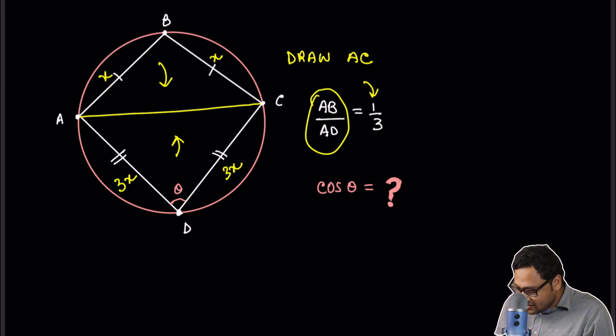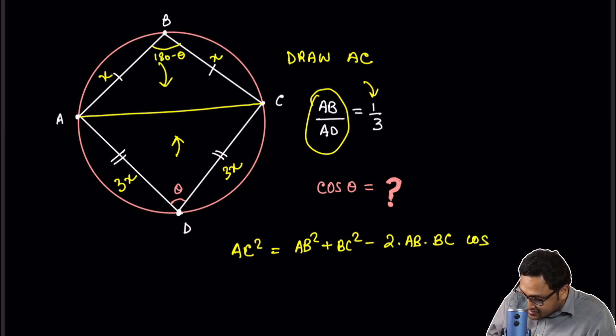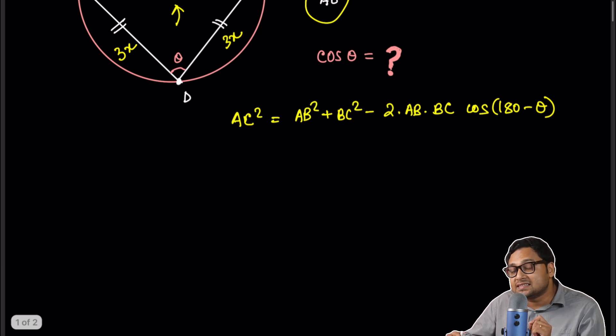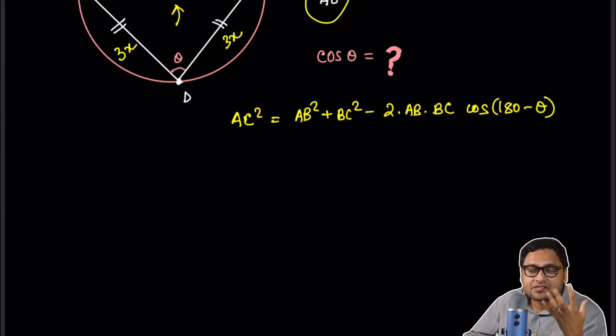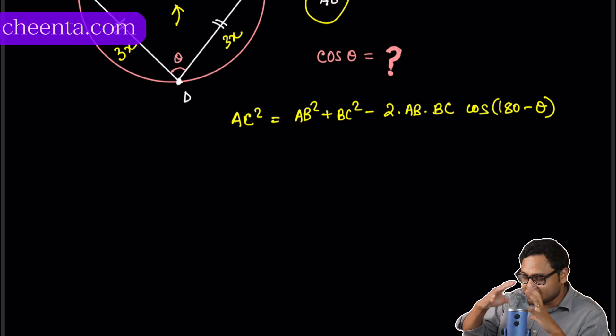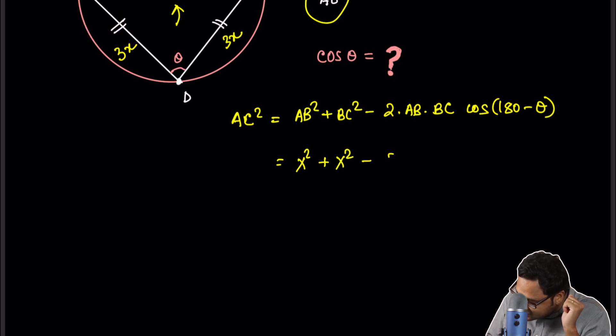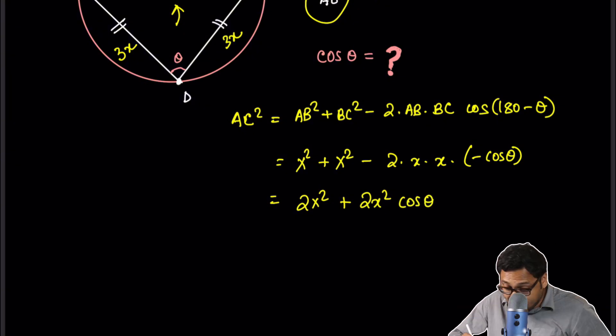So what is AC? AC squared is equal to AB squared plus BC squared minus twice AB into BC into cosine of this is 180 minus theta. It's a cyclic quadrilateral. So if this is theta, then this is 180 minus theta. One thing to notice is that cosine of 180 minus theta is actually minus cosine theta. This is a basic trigonometric fact. So this is equal to X squared plus X squared minus 2 times X times X times negative of cosine of theta. So it is 2X squared plus 2X squared cosine theta.